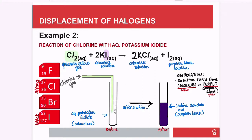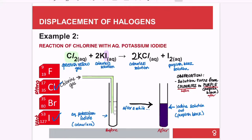When chlorine gas is passed into the potassium iodide solution, after a while the color changes from colorless to purplish black. This purplish black represents the iodine that has been kicked out from potassium iodide. Chlorine is more reactive than iodine, so chlorine can kick the iodide out and take over its position. The purplish black color of the solution is from the displaced iodine.